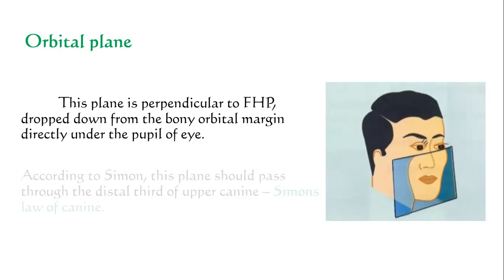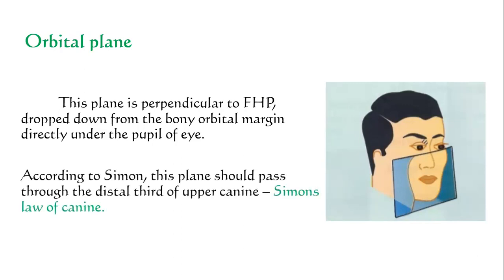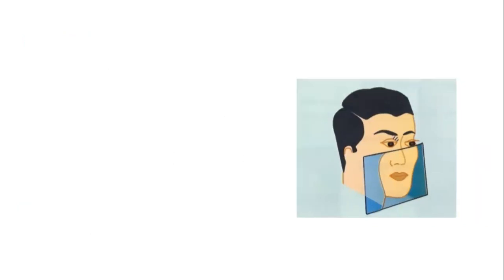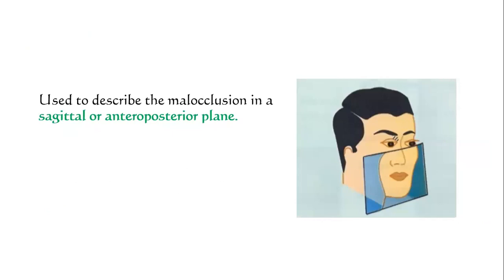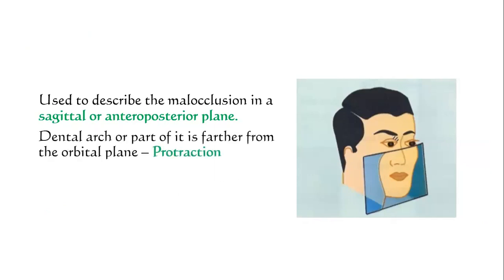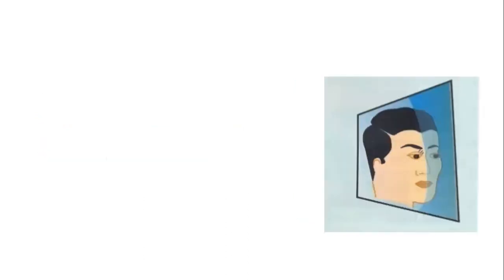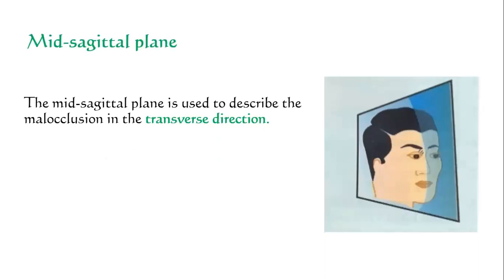According to Simon, the orbital plane should pass through the distal surface of the upper canines — this is called Simon's law of the canine. The orbital plane is used to classify malocclusions in the anteroposterior plane. If the dental arch or part of it is farther away from the orbital plane, it is called protraction; if it is closer to the orbital plane, it is called retraction.